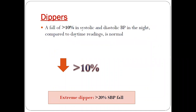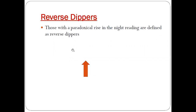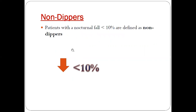Dipping is defined as a fall of more than 10% in systolic and diastolic BP at night compared to daytime readings, and this is considered a normal finding. Extreme dipping refers to a fall in systolic blood pressure of more than 20%. Non-dipping patients show a nocturnal fall of less than 10% and are defined as non-dippers.